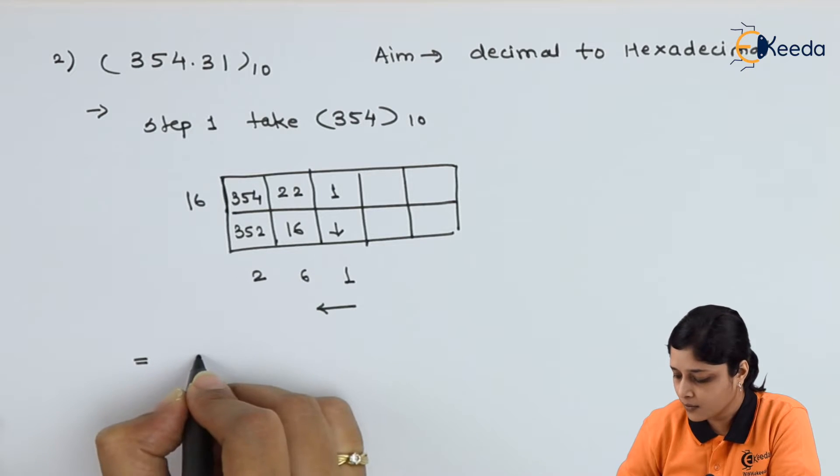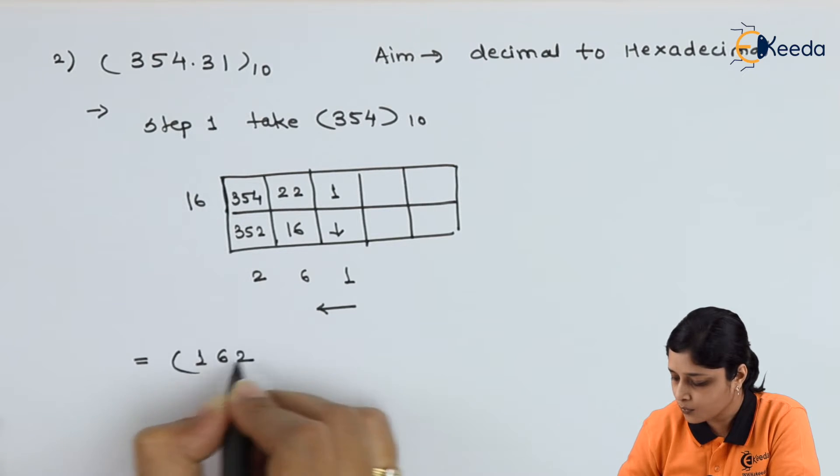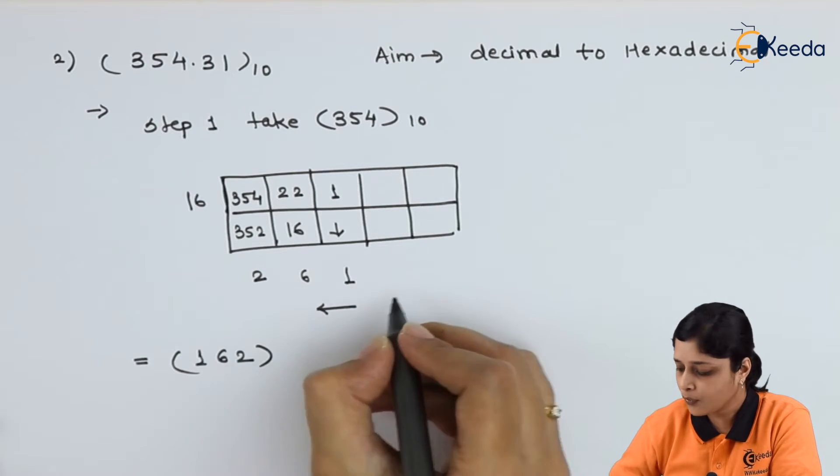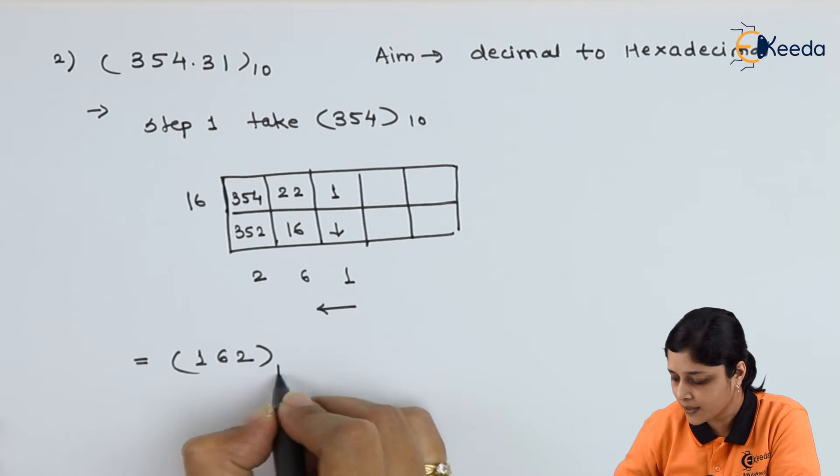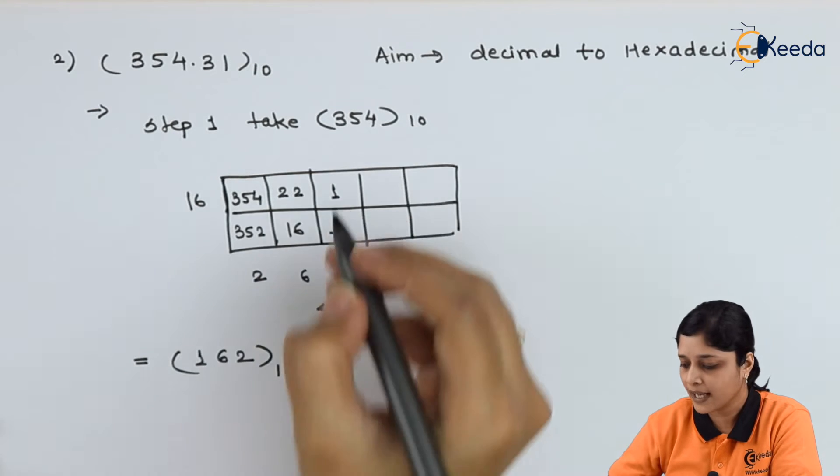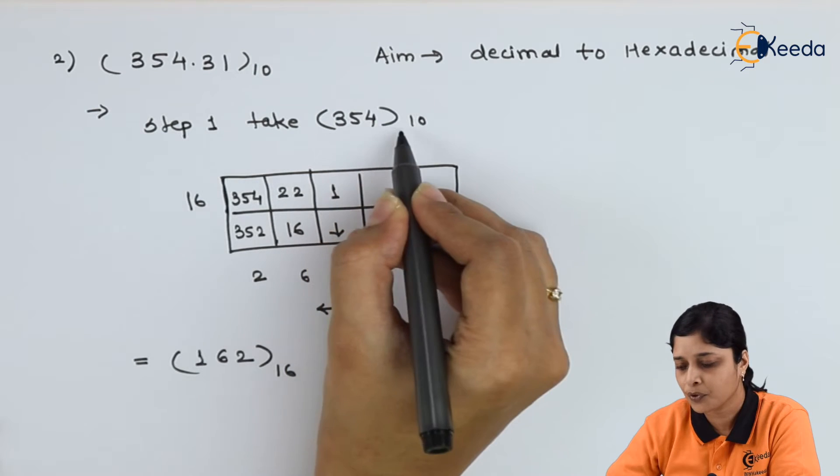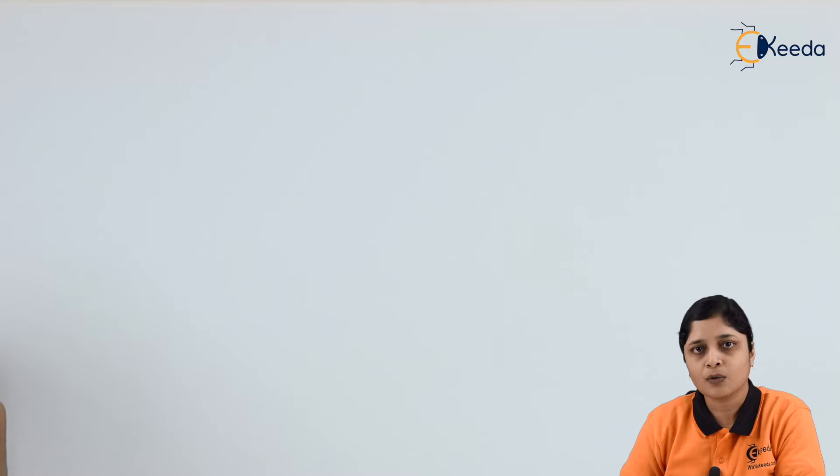Your answer is 162. You have to go from right side to the left side. That's why 162 to the base 16 will give you the answer for 354 to the base 10. Now step 2: